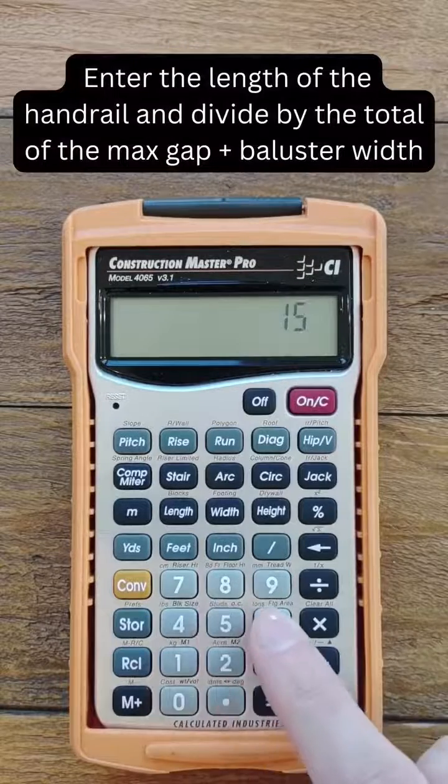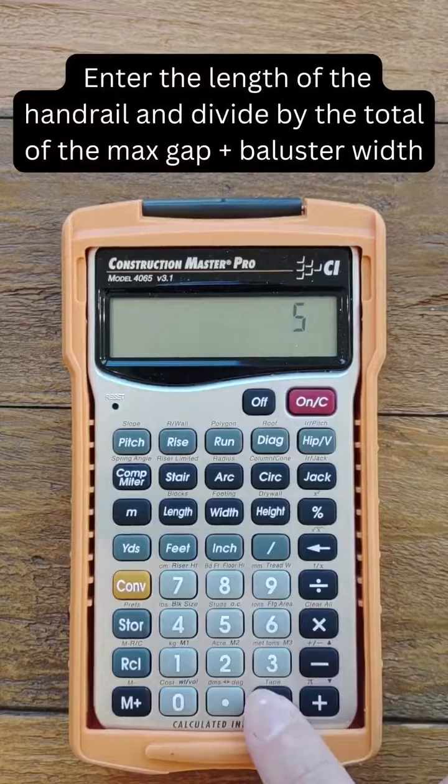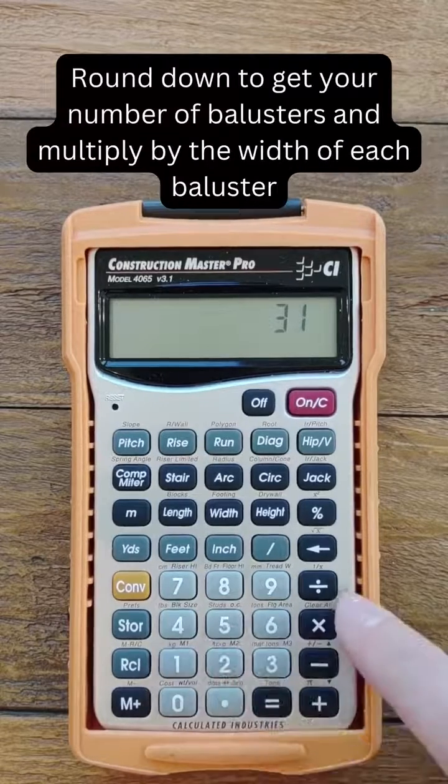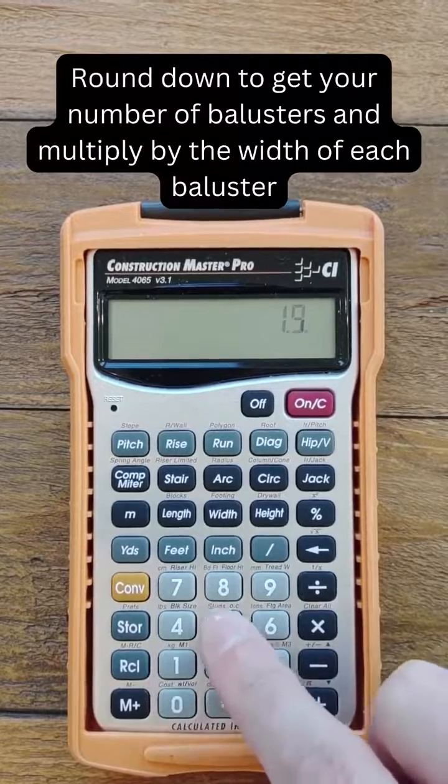First, enter the length of the handrail and divide by the total of the max gap plus baluster width. Then round down to get your number of balusters and multiply by the width of each.